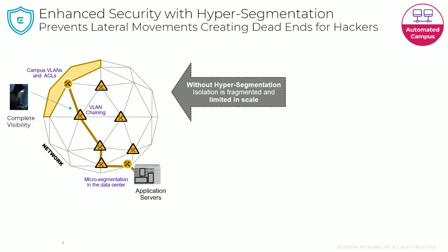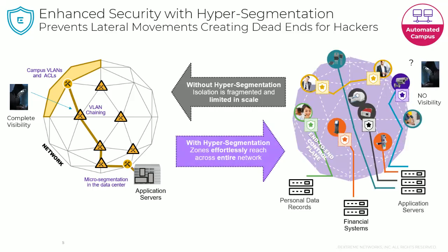What are the end results? Without hypersegmentation and stealth networking, you're locked into campus VLANs, access control lists, and route policies, giving hackers fairly good visibility into the network infrastructure. With Fabric Connect and end-to-end ISID capabilities, hypersegmentation effortlessly spans the whole network, and an attacker's visibility is greatly compromised — limited only to the local segment they've compromised. If they've breached the video surveillance system, they can't get anywhere else. The segment limits cross-propagation and lateral movement, creating a dead end for hackers and forcing them to be much noisier in their endeavors.